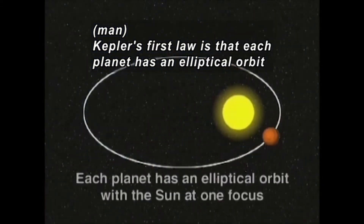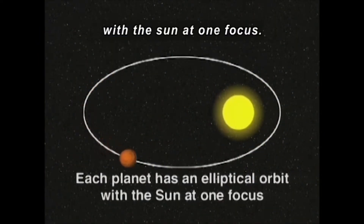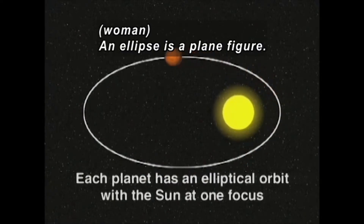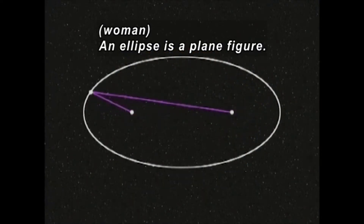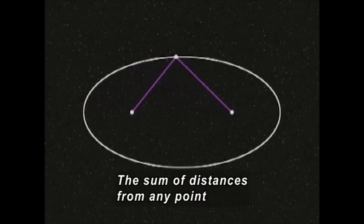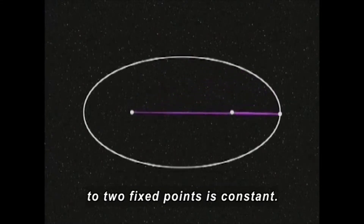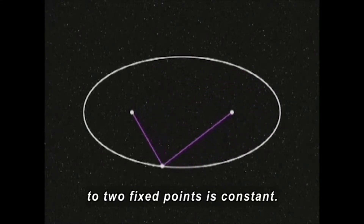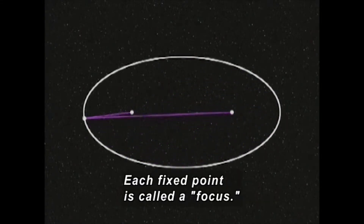Kepler's first law is that each planet has an elliptical orbit with the sun at one focus. An ellipse is a plane figure such that the sum of the distances from any point on the figure to two fixed points in the plane is constant. Each fixed point is called a focus.